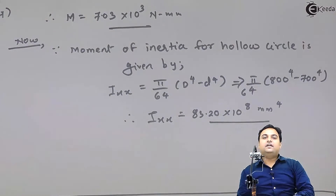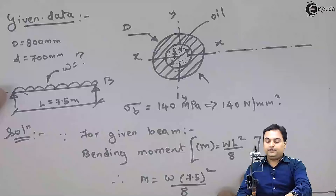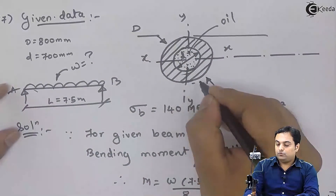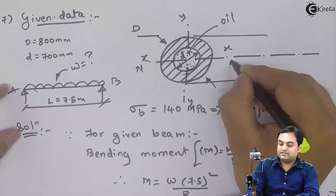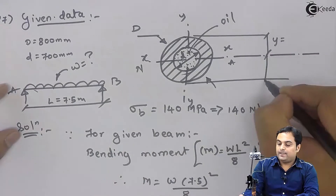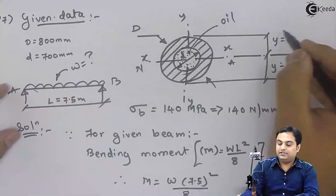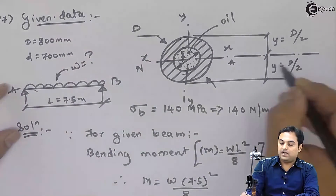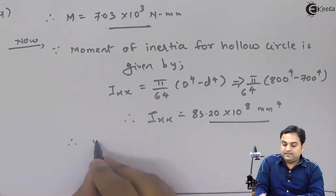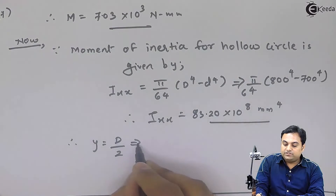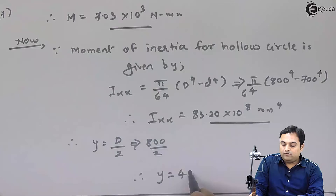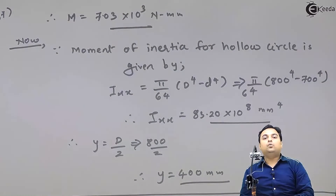Next I need to find y. Looking at the topmost fiber, y is the distance from the neutral axis, which is the centroidal axis. For a hollow circular section, y = D/2 = 800/2 = 400 mm. So y = 400 mm.